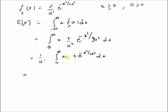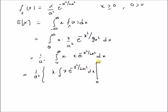Now by using integration by parts — assuming the first function is x and the second function is x · e^(−x² / 2a²) — we have (1/a²) · [ x · ∫x · e^(−x² / 2a²) dx ] from 0 to infinity, minus the integral of the derivative of the first function (which is 1) times the integral of the second function, that is ∫x · e^(−x² / 2a²) dx, over 0 to infinity.